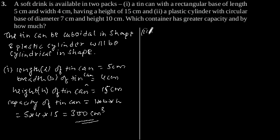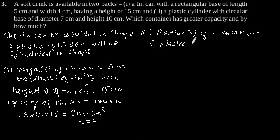Now, solving for the second. Radius R of circular end of plastic cylinder is equal to 7 by 2 which is equal to 3.5 cm.